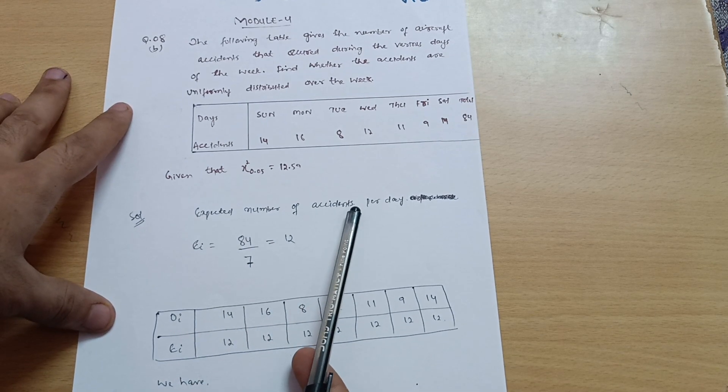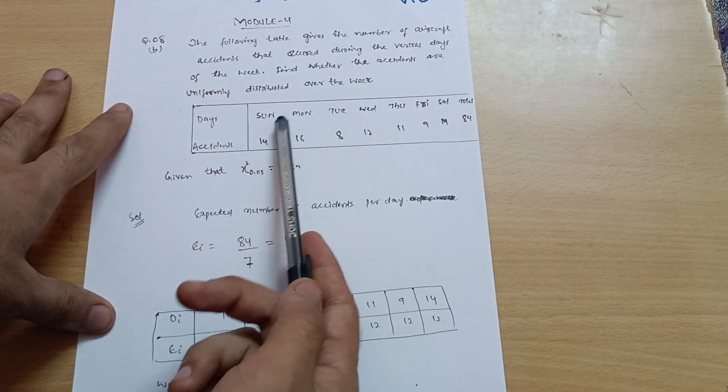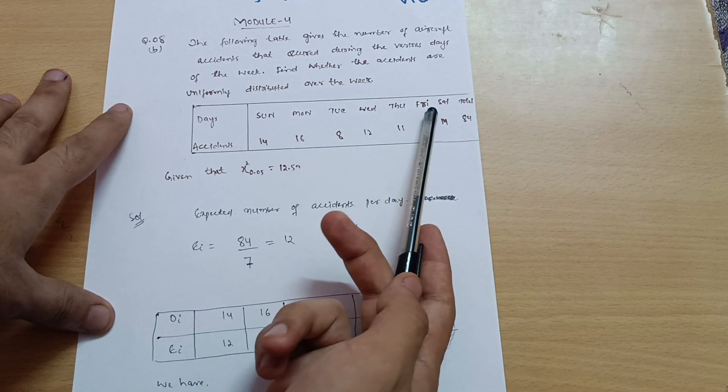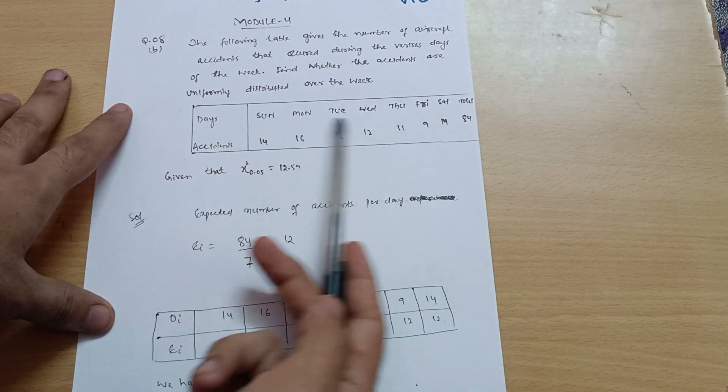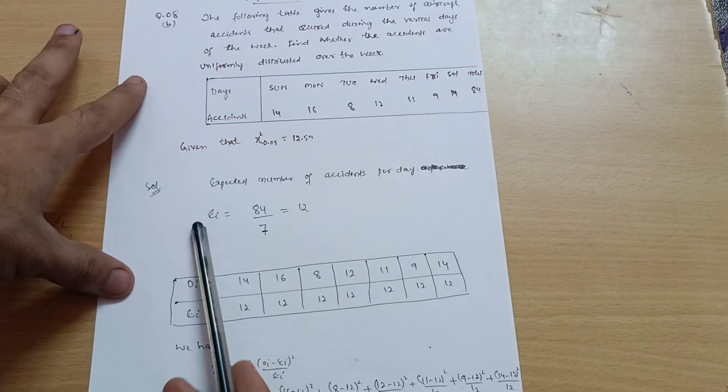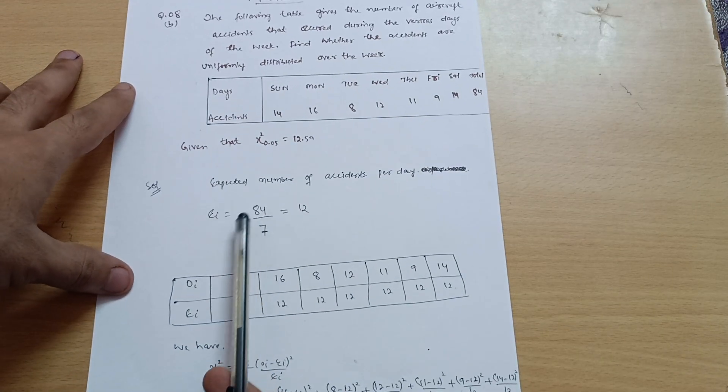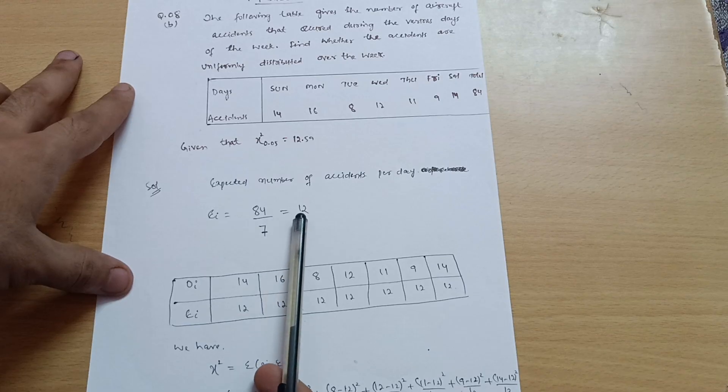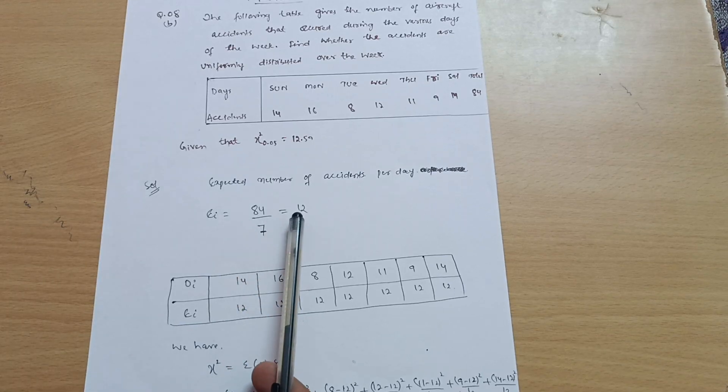See here, these are the days: Sunday, Monday, Tuesday, Wednesday, Thursday, Friday, and Saturday. So these are the seven days, and the total number of accidents are 84. So you can take the expected value for the accident: 84 upon 7 is equal to 12. So expected value you are getting 12.